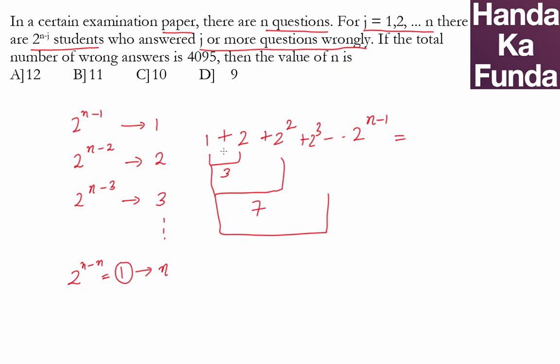That will be 7 plus 8 or 15. If you notice the pattern, it leads to 2 to the power of n minus 1. This was 16 minus 1, 8 minus 1, and 4 minus 1. So 2 to the power of n minus 1 is going to be the number of wrong answers, which is given to me as 4095.